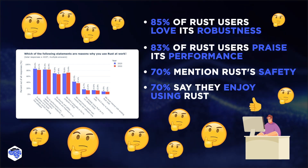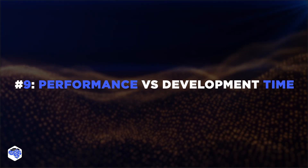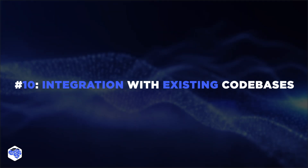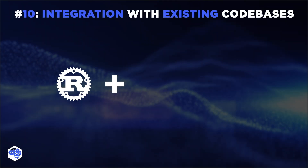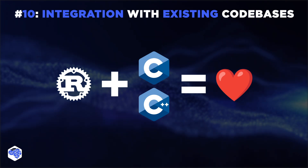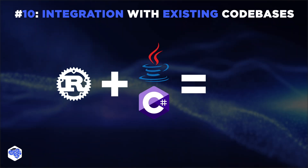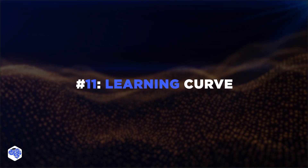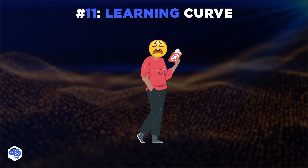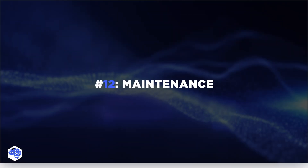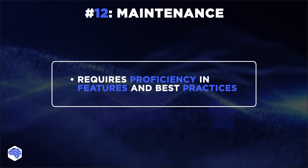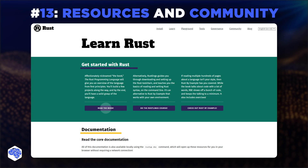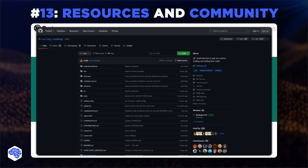However, some aspects must be considered before starting programming with Rust. While Rust provides excellent performance and safety, achieving these benefits may take more development time. Also, be sure to evaluate Rust's compatibility with your current tech stack — Rust integrates seamlessly with C and C++, but integrating with managed languages like Java and C#, as well as scripting languages like Python and JavaScript, often requires additional tooling and can be more complex. Rust's advanced concepts like ownership and lifetimes contribute to its learning curve, particularly for newcomers to systems programming. Maintaining Rust code requires proficiency in its features and best practices. However, there are plenty of resources available to help you learn Rust, from books and tutorials to documentation and numerous community forums.